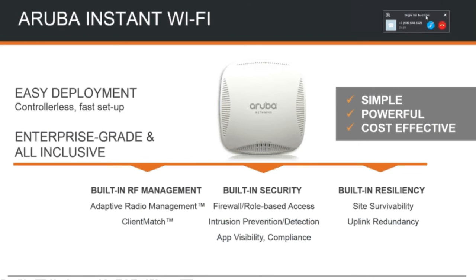And then we have application visibility. Built into the Instant platform, we have something called a deep packet inspection engine. That actually has roughly a couple thousand applications that we're aware of the signatures of. So if I want to block BitTorrent, I don't have to just go in and say I want to block these ports — I can block this traffic as a type, which is incredibly useful.